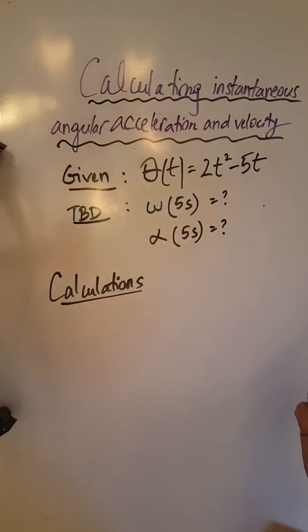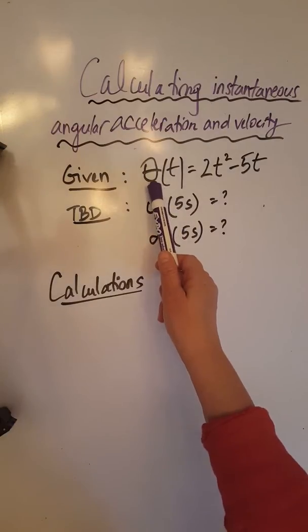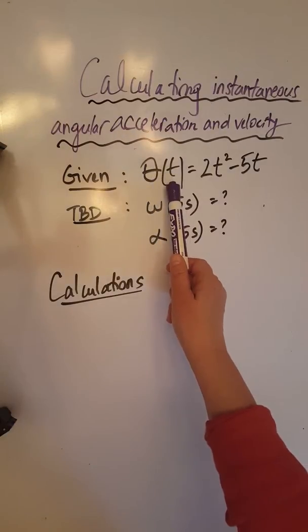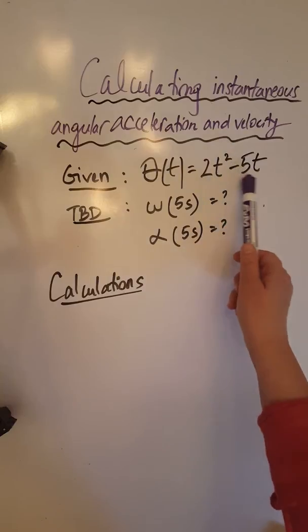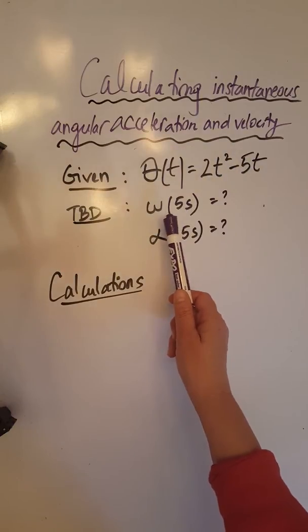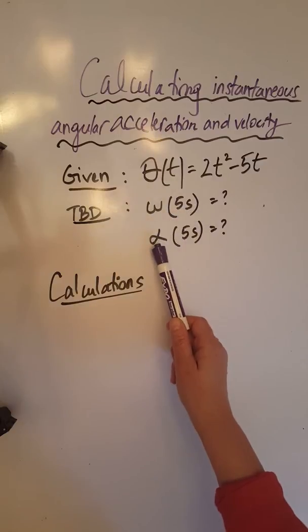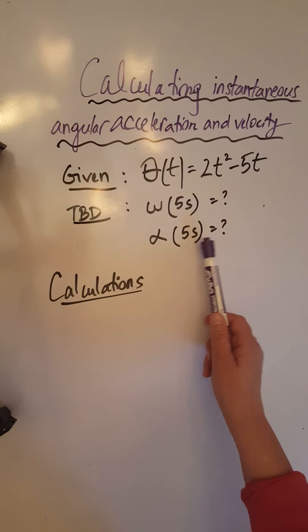This specific problem goes over an example in which the central angle theta as a function of time is 2t squared minus 5t, and they ask us to determine the angular velocity at 5 seconds and the angular acceleration at 5 seconds.